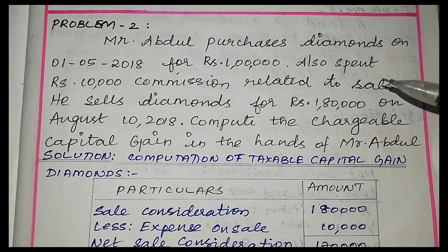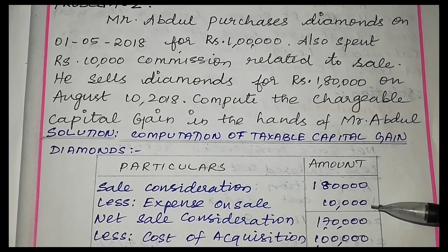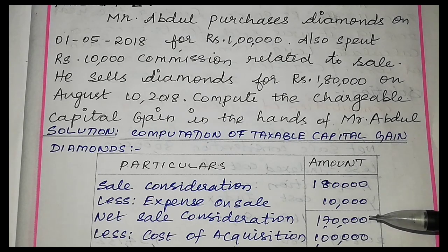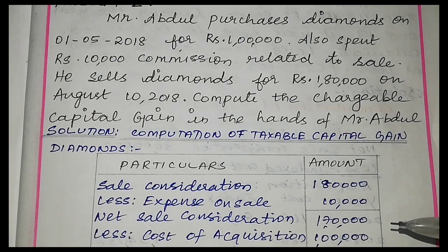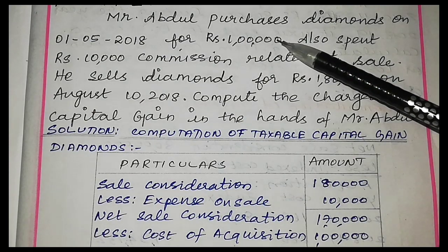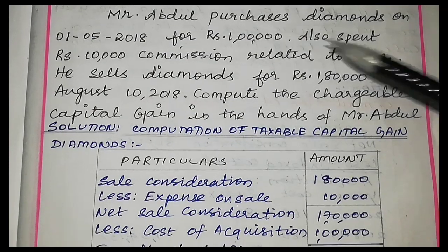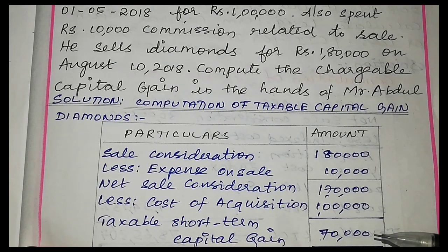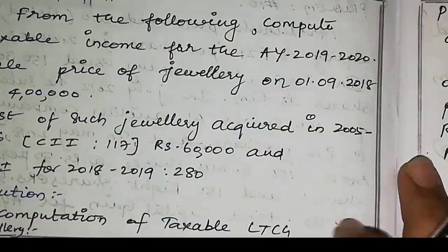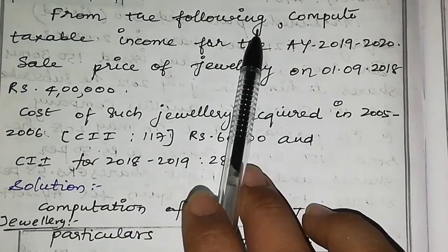Since Rs. 10,000 commission is paid, we will be getting a net sale consideration of Rs. 1,70,000. Deducting the cost of acquisition — that is the purchase value of Rs. 1,00,000 — we will be getting Rs. 70,000 as the taxable short-term capital gain.